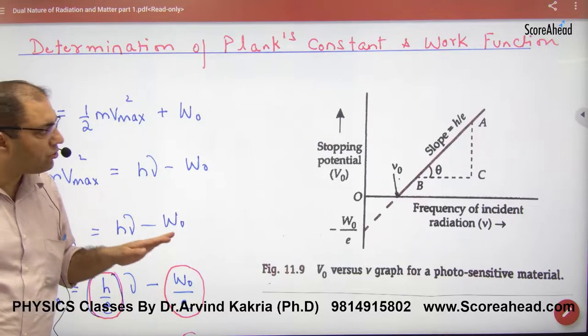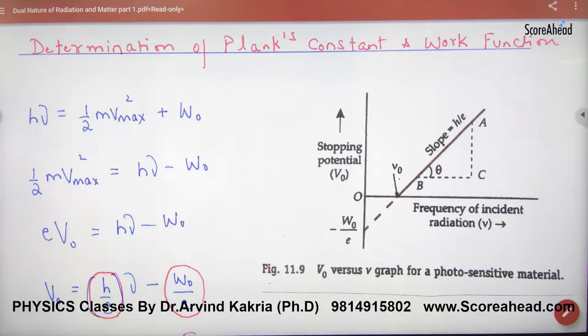Finding Planck's constant and work function. The theory is that hν is the photon energy. In this case, some work function, some kinetic energy of electron.